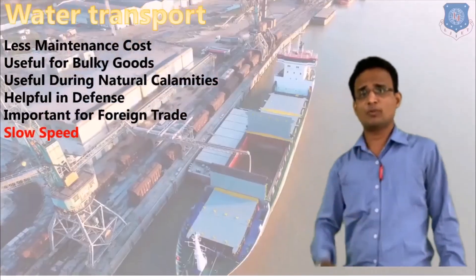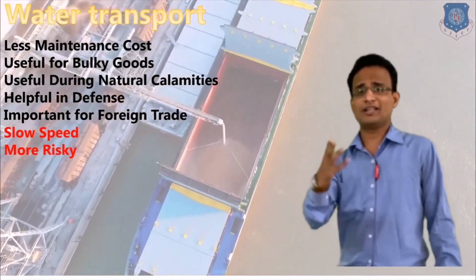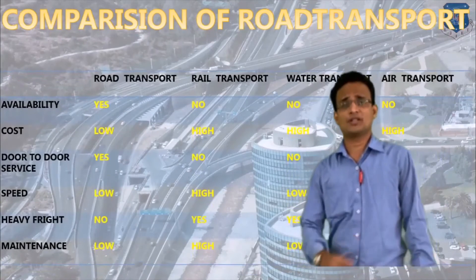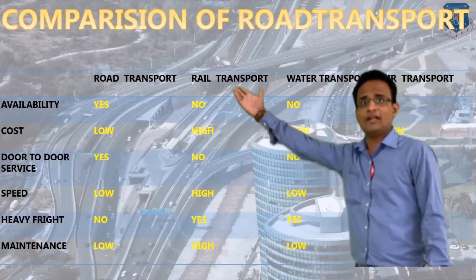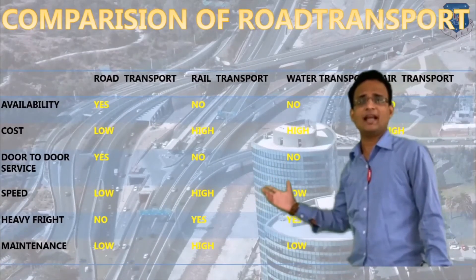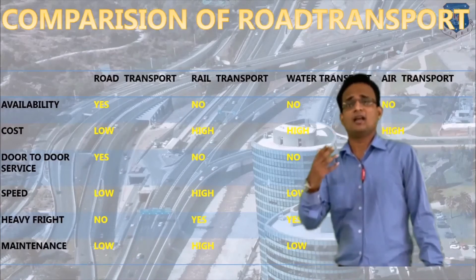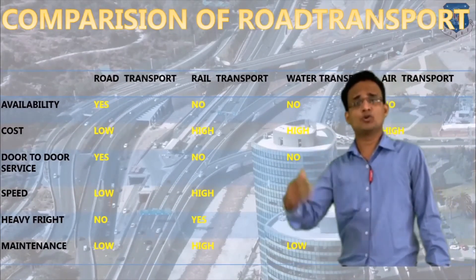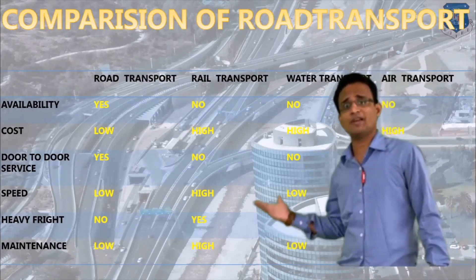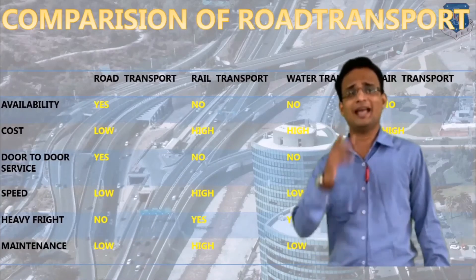The disadvantages of water transport are slow speed and higher risk. Compared to road, air, and rail transport, water transport is much slower and riskier. By way of comparison across all modes: road transport is easily available, low cost, provides door-to-door service, but has low speed and cannot carry heavy freight. Rail provides large capacity. Air provides highest speed. Water provides the largest bulk capacity. Road transport also has very low maintenance compared to other modes.